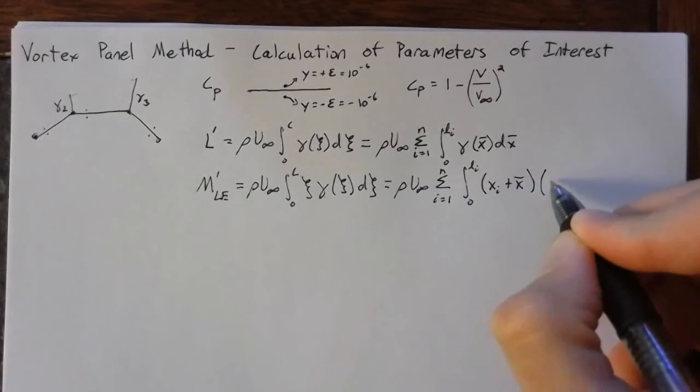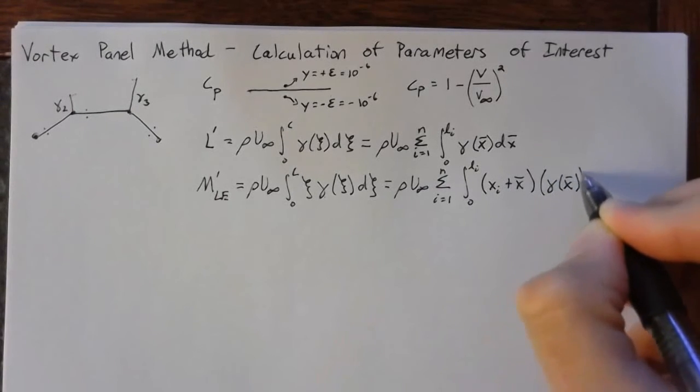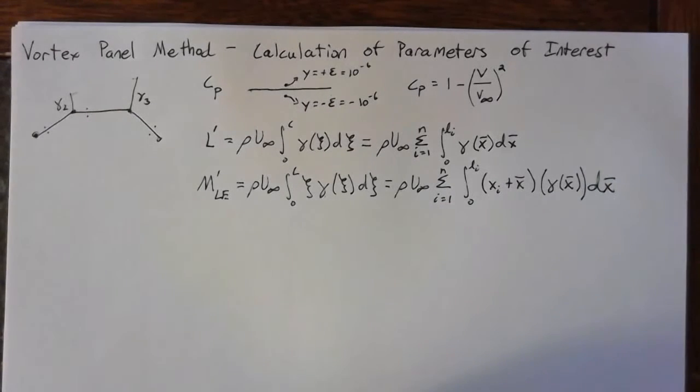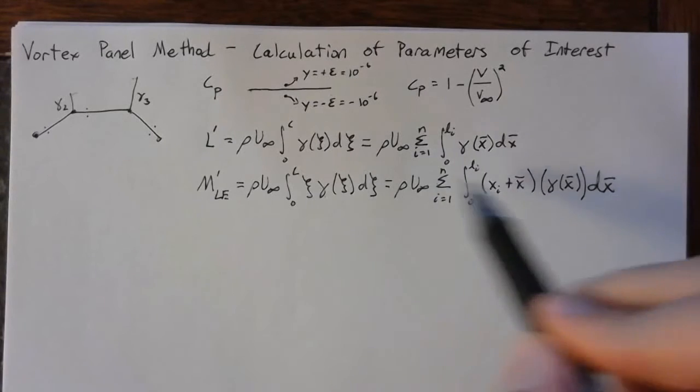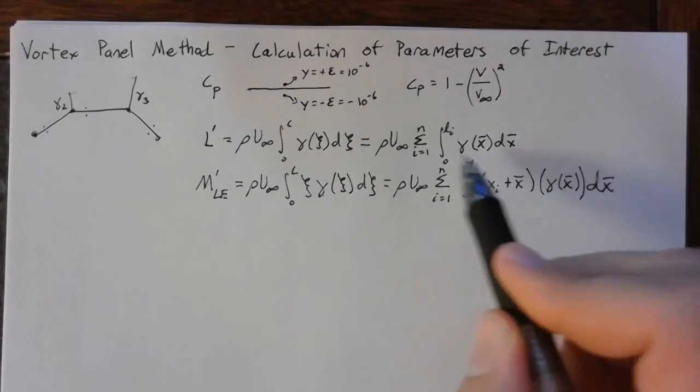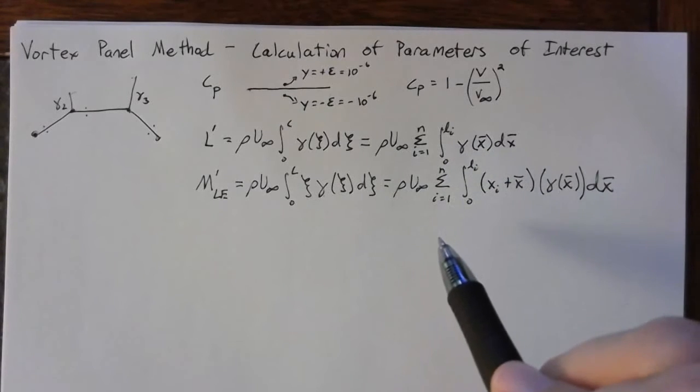And then our gamma, once again, will be gamma of x bar. And once again, we'll have a dx bar. So this is how we formulate these integrals. And then we can evaluate them once we actually know what this gamma distribution is.